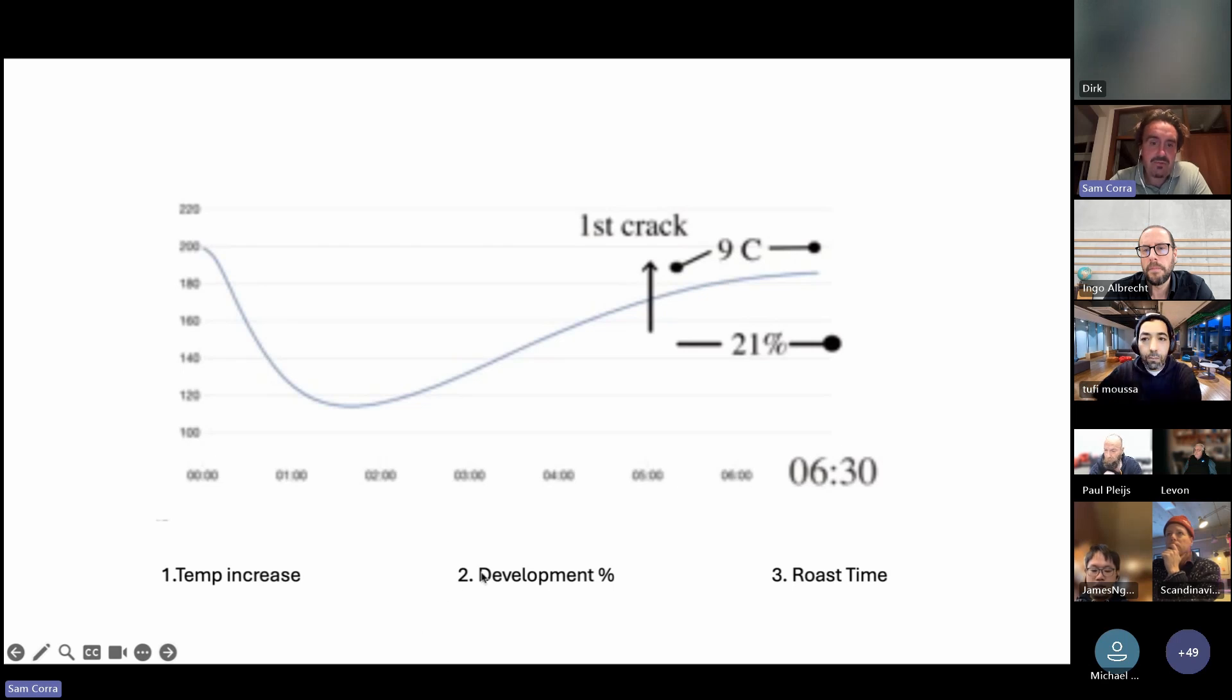Big one I'd be looking for is that development percentage. I think that's really handy within the Link system with what you're seeing. You can take that information or the profile you've started to build based on drop temperature, turning point, applied heat through the middle, knowing roughly when it's going to crack, knowing when you should come into first crack. Then you've got that last stage where it's monitoring your development stage. I would definitely be focusing around that time frame as well that you're targeting.